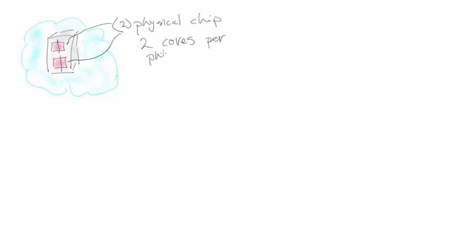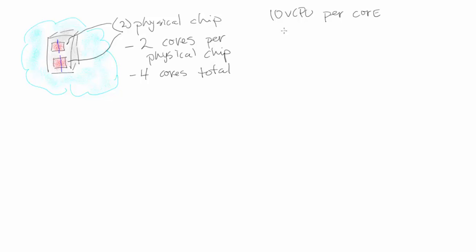Why do we need to know the number of cores? Because our calculation variable is built upon the number of cores. Here we have four cores within this system total, so let's go ahead and put the variable. We're defining 10 virtual CPUs per core.